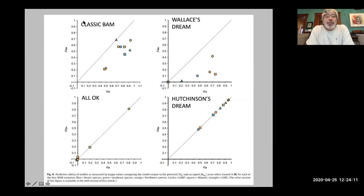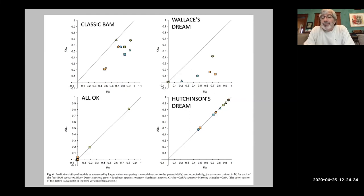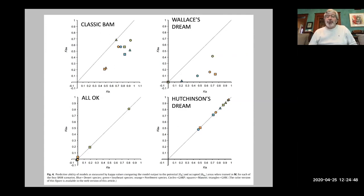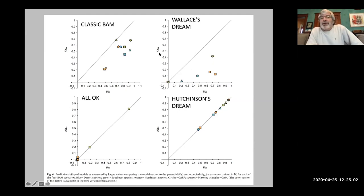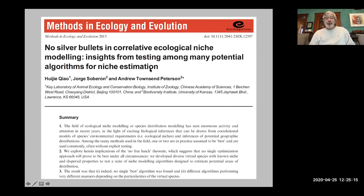We created simulated species for each BAM configuration, did model fitting, and asked in which cases we get a good model. Using a matching statistic called kappa — where near one is perfect matching and near zero is random — classic BAM and Hutchinson's dream get far toward the good end. But Wallace's dream and the 'all okay' configuration cluster right around zero, meaning those models are patently random with no predictive power.